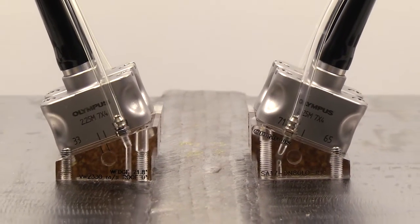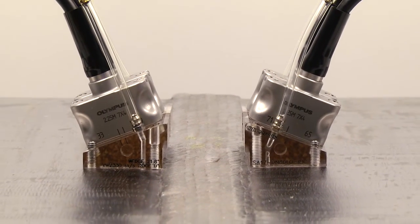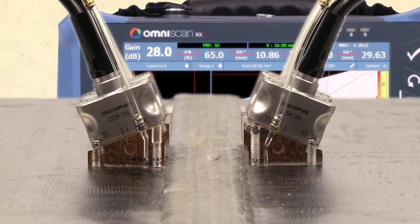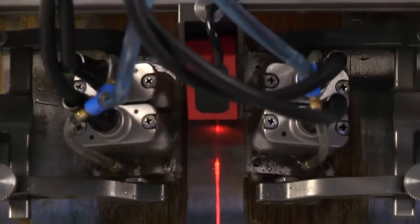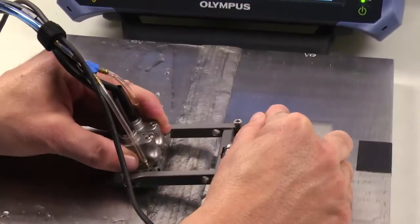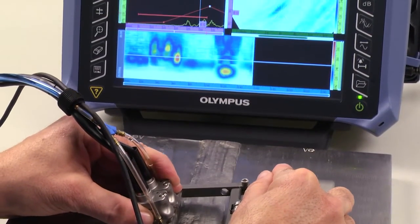Olympus dual matrix arrays are one more application that expands the range of what is possible with an OmniScan and allows rapid development and qualification at the inspector level using standard catalog products.